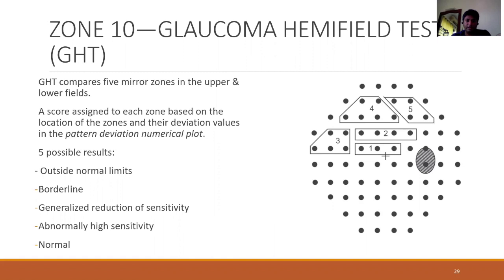The glaucoma hemifield test maps points in the visual field along RNFL bundles. Five zones in the superior hemifield are compared to five zones in the inferior hemifield, and any significant difference yields a result. The five possible results are: outside normal limits, borderline, generalized reduction of sensitivity, abnormally high sensitivity, or within normal limits. The GHT is derived from the pattern deviation numerical plot and cannot be used with the 10-2 pattern — it is mainly for the 24-2 or 30-2 patterns.